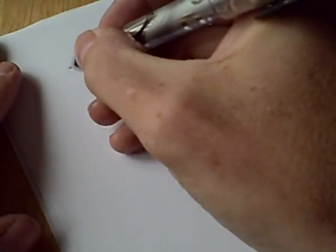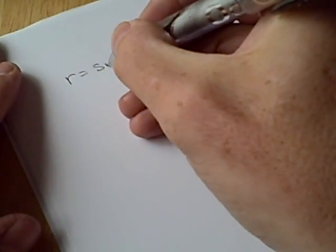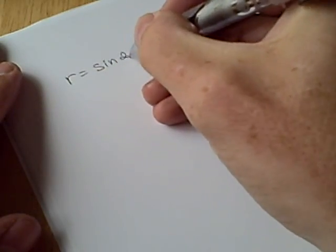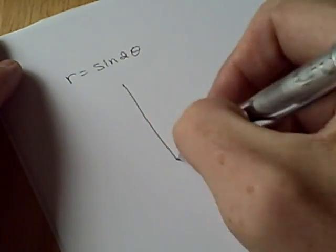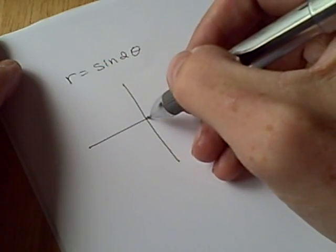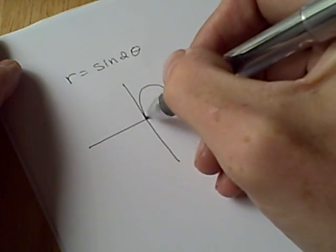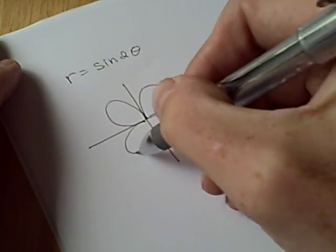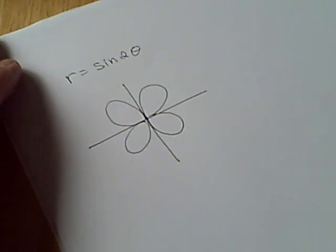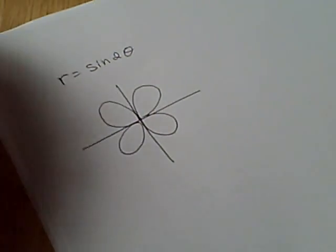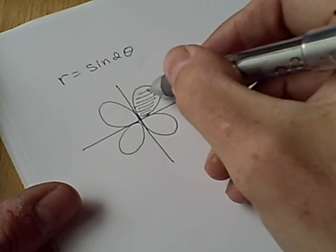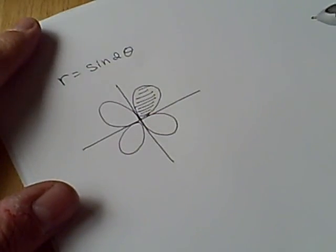So let's look at r equals sine 2 theta. Now if we graph this, it looks sort of something like this. It's a four petaled flower. And suppose we want to find the area of just one of the petals.